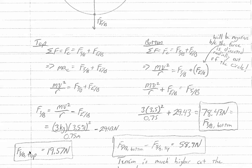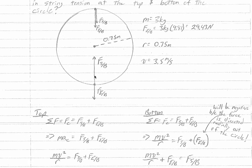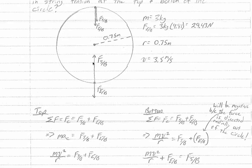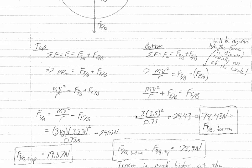Crunching the numbers, we find the force of the string on the bucket at the top of the circle is positive 19.75 newtons. I've chosen to define any force directed towards the center of the circle as positive, which means the force of the earth and the string at the top, and the force of the string at the bottom, all have positive values. Anything pointed radially outward will have a negative value — that will be the force of the earth on the bucket at the bottom.